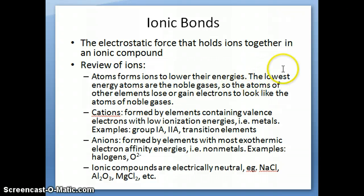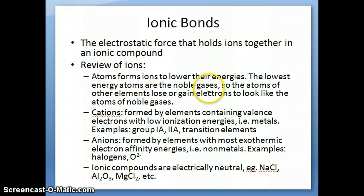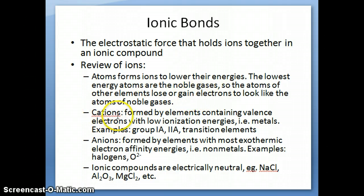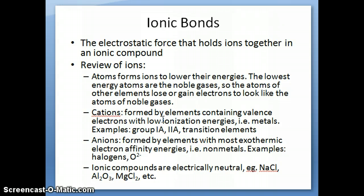In the periodic table, the atoms that have the lowest energies are the noble gases. They have the lowest energy because of something unique about the way their electrons are arranged in the orbitals. So atoms of other elements try to look like noble gas atoms by either losing or gaining electrons. When they lose electrons, they form cations. Cations tend to be formed by elements whose valence electrons have very low ionization energy — it's easy to remove these valence electrons. These elements tend to be metals.